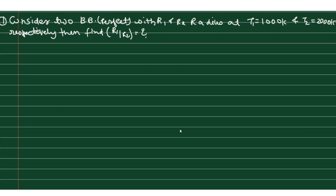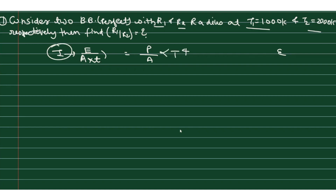First question: consider two black bodies — perfect black bodies — with radii r1 and r2 at temperatures t1 and t2 respectively. We have to find the ratio of the radii. You have to understand that intensity is energy upon area into time, and energy upon time is equal to power, so intensity equals power upon area. From black body theory, intensity is proportional to T to the power four, so power is proportional to T⁴ times area. Since both black bodies emit equal power, we set T1⁴·A1 = T2⁴·A2.